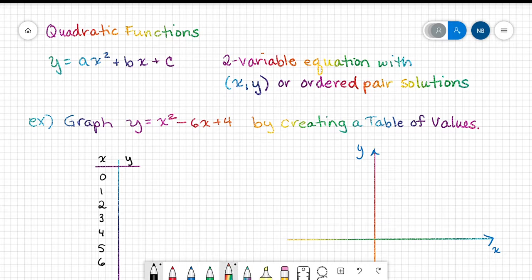Alright, now when we plug in zero for x, we get zero squared minus six times zero plus four, which is equal to four. When we plug in one for x, we get one squared minus six times one plus four, which is negative one. When we plug in two for x, we get two squared minus six times two plus four, which is negative four.